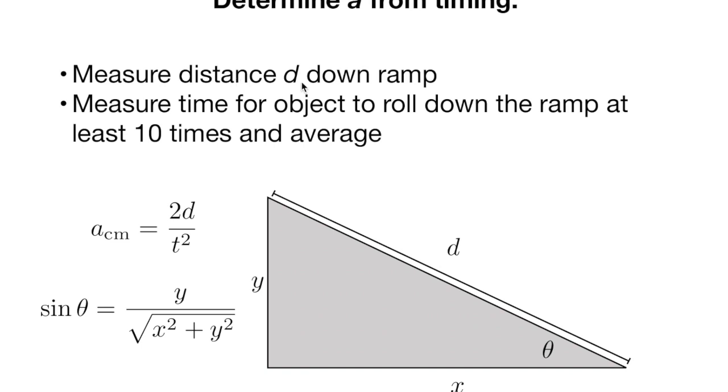In this case you're going to measure the properties of your ramp, your geometry, where you measure the distance down the ramp as d. Then all you're going to do is roll an object from the top down here to the bottom and you'll do that 10 times and come up with an average time.